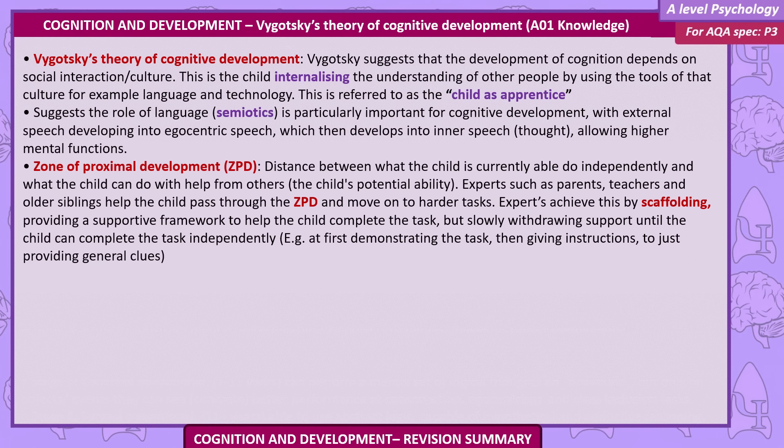Experts such as parents, teachers, and older siblings help the child pass through the ZPD and move on to harder tasks. Experts achieve this by scaffolding — providing a supportive framework to help the child complete the task, but slowly withdrawing support until the child can complete the task independently. For example, at first demonstrating the task, then giving instructions, to just providing general clues.